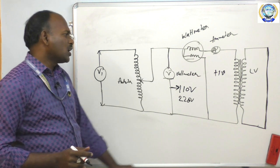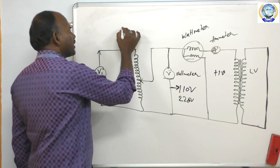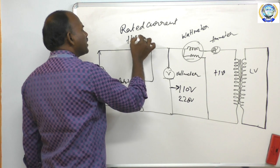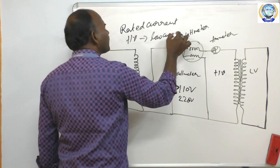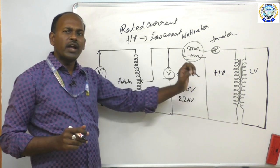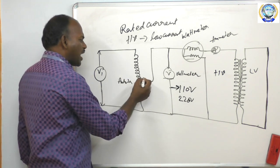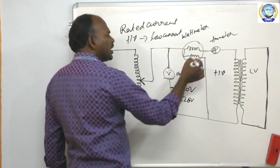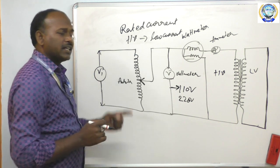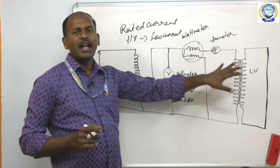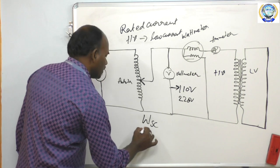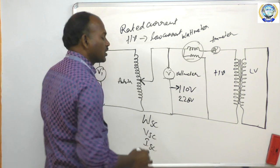Why connect meters on the HV side? Because here we have to apply the rated current. When the high voltage side has low current, we connect meters on the high voltage side to get a lower value of current. You vary the auto transformer until the ammeter reading gives the rated current value, then take a set of readings of voltmeter, wattmeter, and ammeter — giving Wsc, Vsc, and Isc.